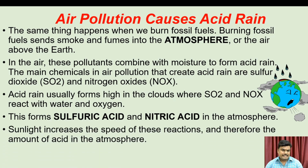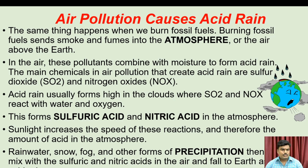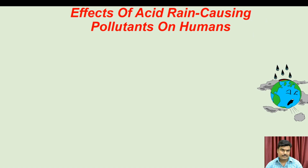Sunlight increases the speed of these reactions and therefore the amount of acid in the atmosphere. Rain water, snow, fog and other forms of precipitation then mix with sulfuric acid and nitric acid in the air and fall to the earth as acid rain.